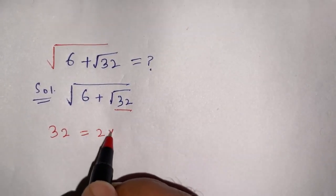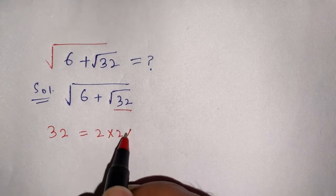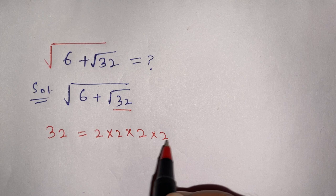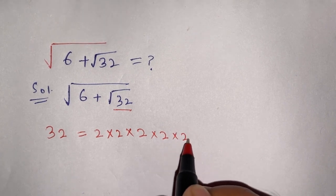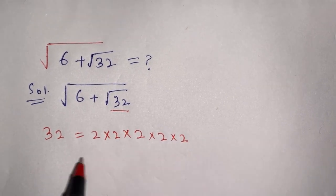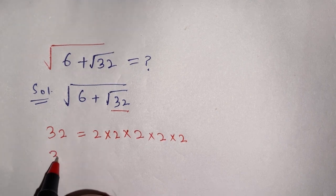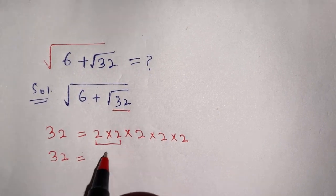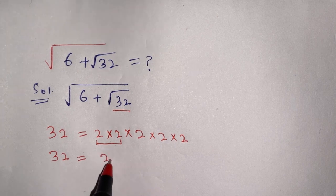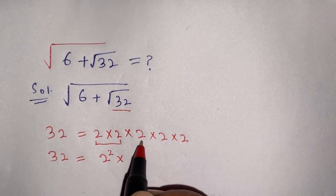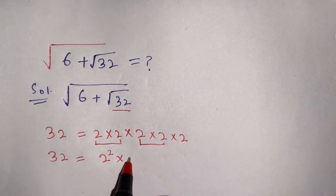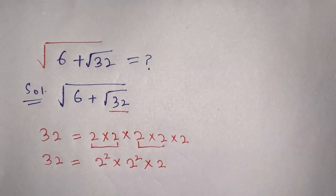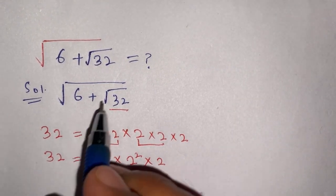32 can be written as: 2 times 2 equals 4, 4 times 2 equals 8, 8 times 2 equals 16, and 16 times 2 equals 32. Thus 32 is equal to 2 times 2 times 2 times 2 times 2, which is 2 power 2 times 2 power 2 times 2.